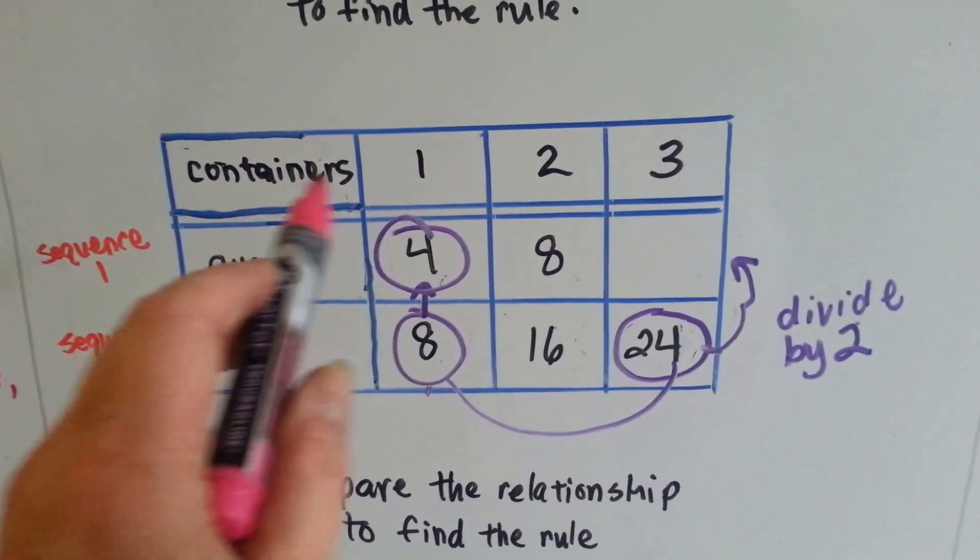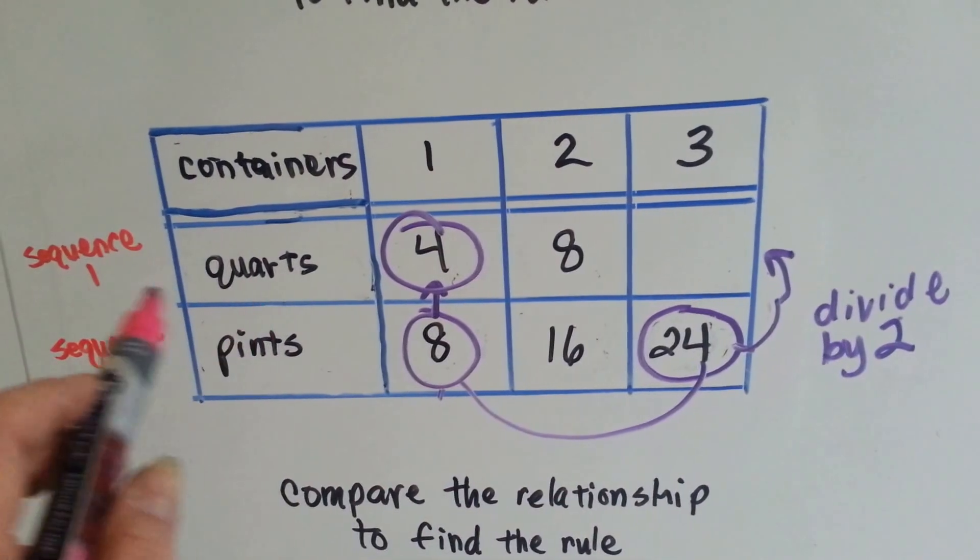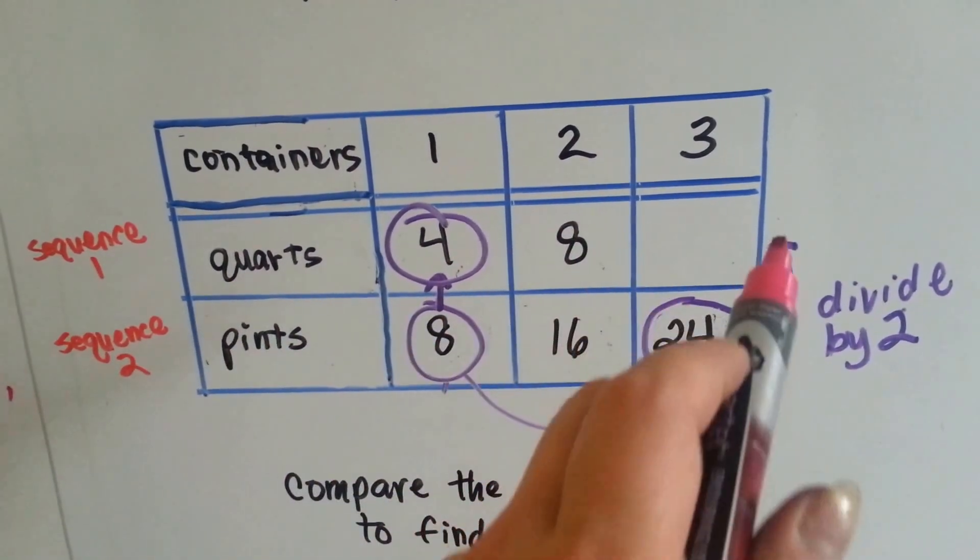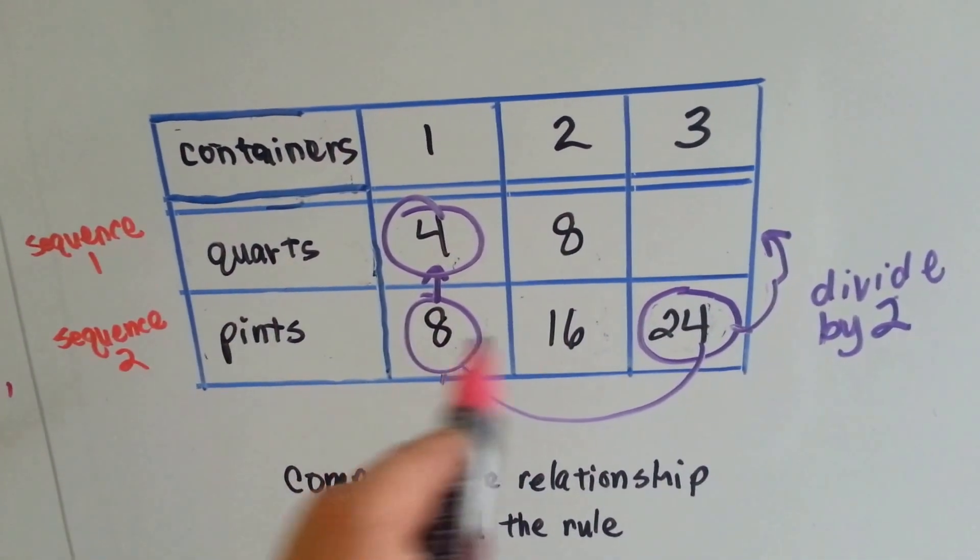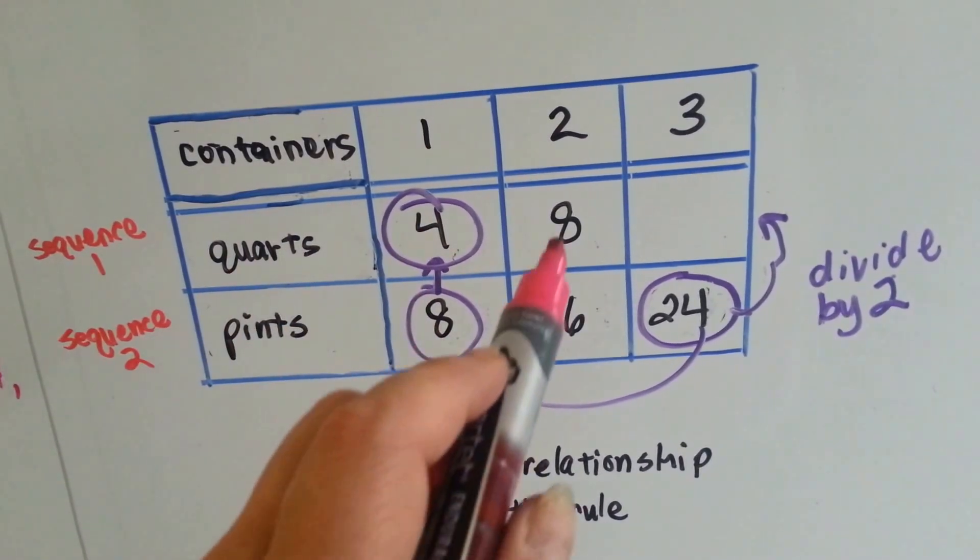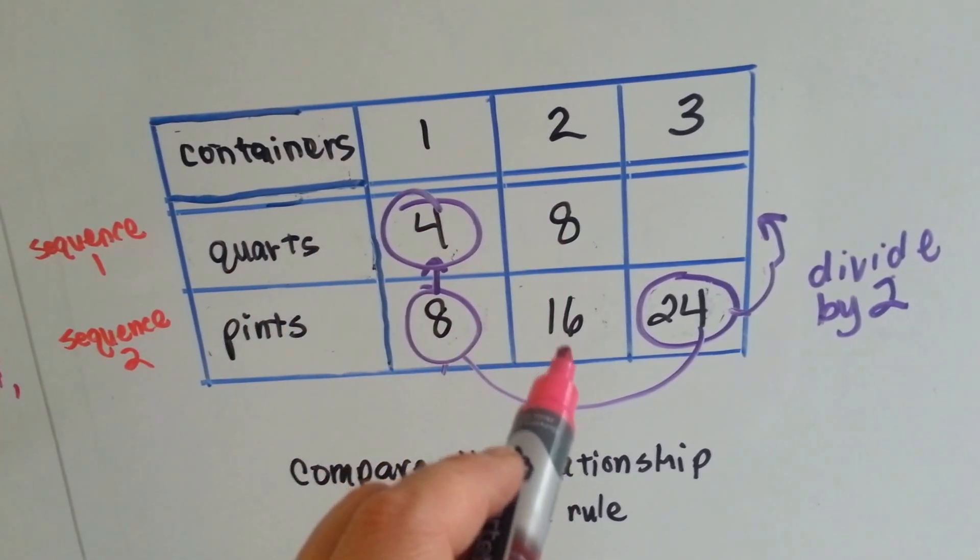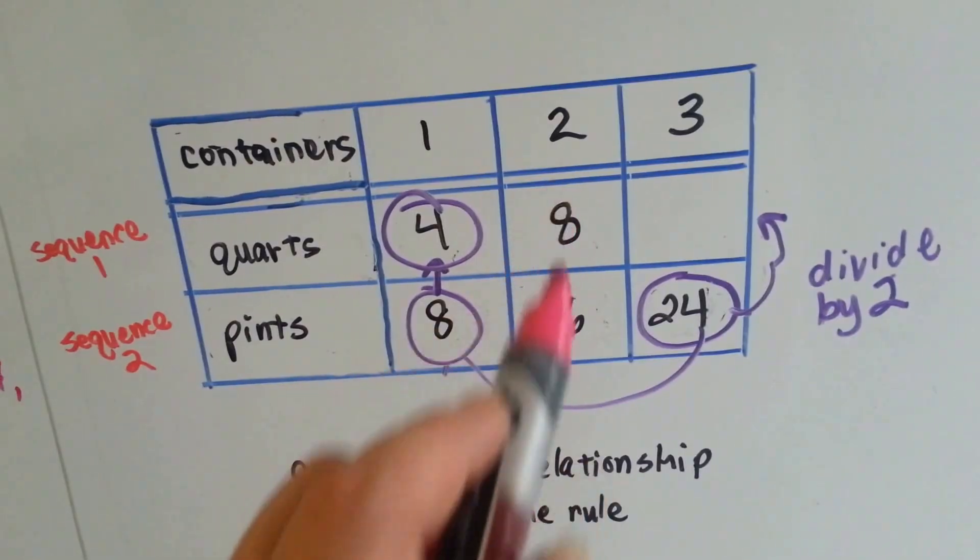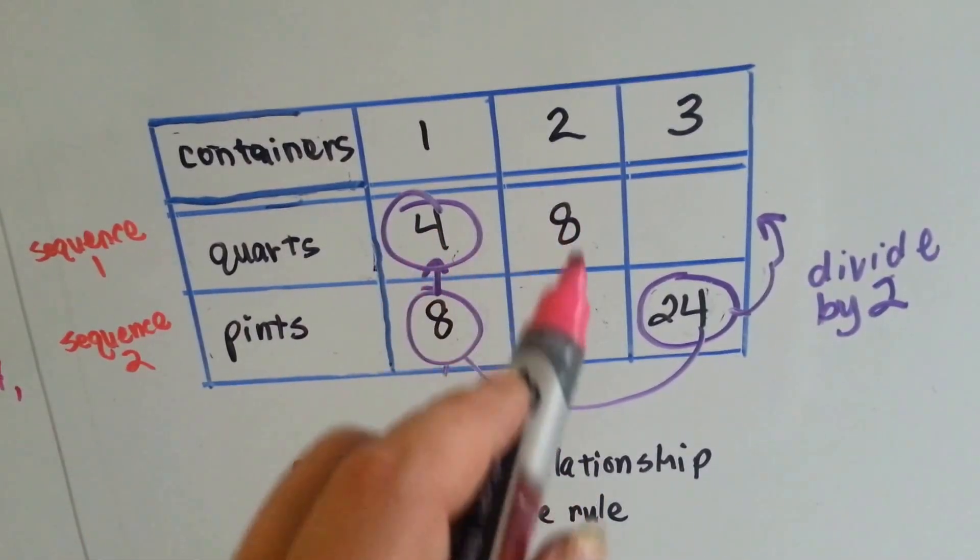Well, if we had numbers of containers, and in sequence 1 we had how many quarts were in the container, and in sequence 2 were how many pints. 4 quarts would be 8 pints. 8 quarts would be 16 pints. Do you see the relationship of what's happening between quarts and pints?